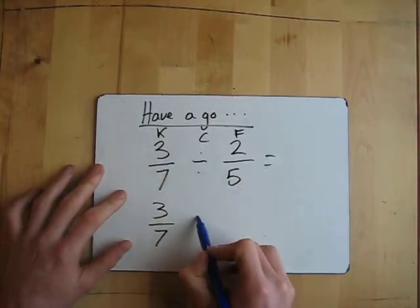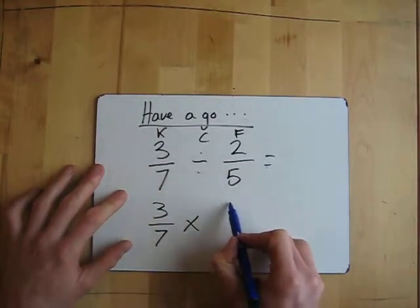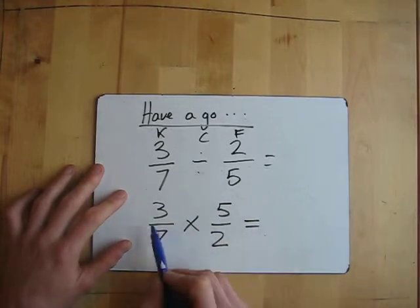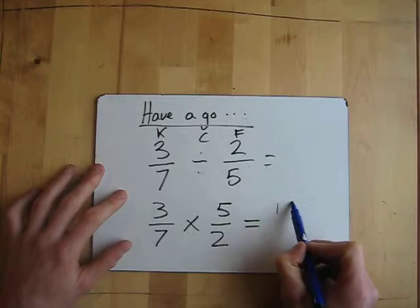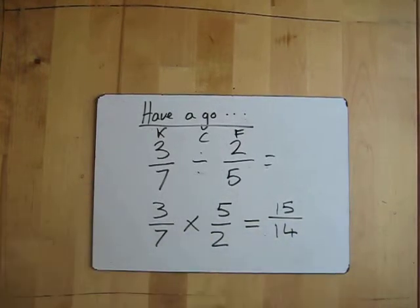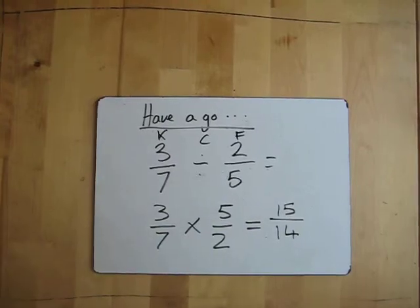We keep this the same, 3/7, change it to multiply, and then flip these so the 5's at the top and 2's at the bottom. Then we do 3 times 5 which is 15, multiply the top, and then multiply the bottom, 7 times 2 which equals 14, and that is it.